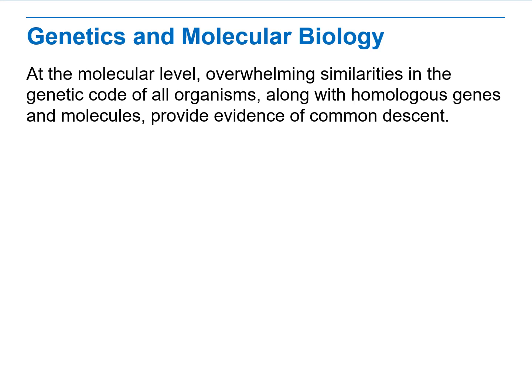One example of molecular evidence for evolution is that all living cells use information coded in DNA and RNA to carry information from one generation to the next and to direct protein synthesis. This genetic code is nearly identical in almost all organisms, including bacteria, yeasts, plants, fungi, and animals. This is powerful evidence that all organisms evolved from common ancestors that shared this genetic code.